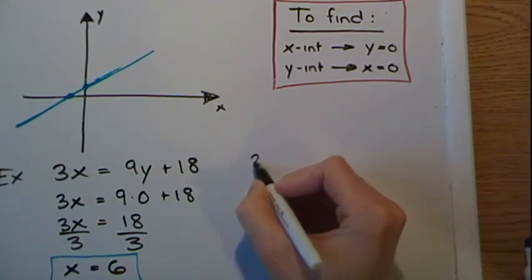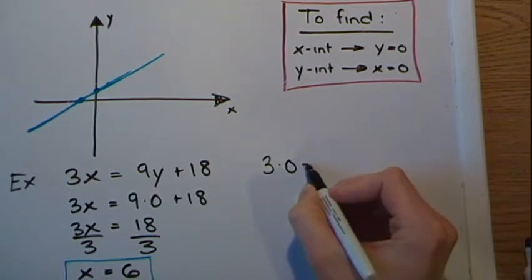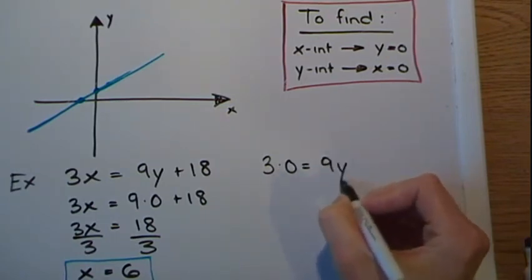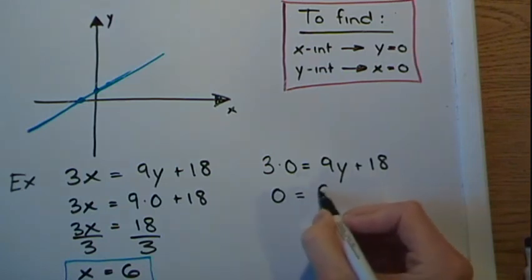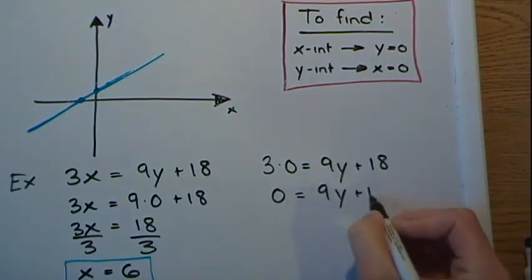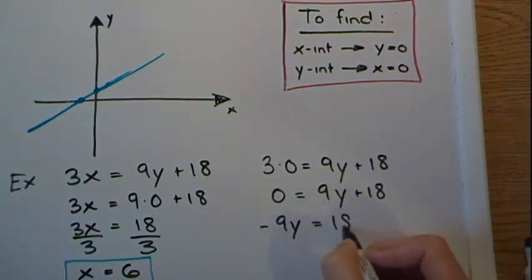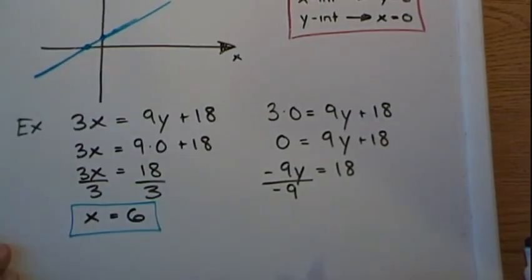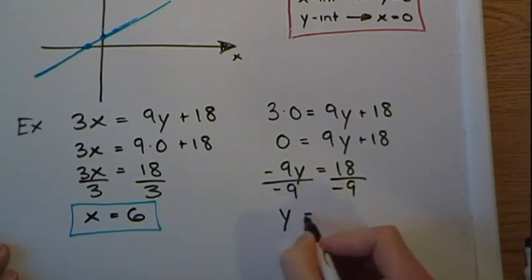So 3 times 0 equals 9y plus 18. 0 equals 9y plus 18. And then negative 9y equals 18 divided by negative 9. And then our y intercept is going to be negative 2.